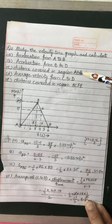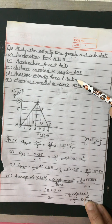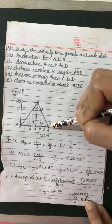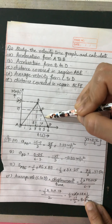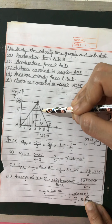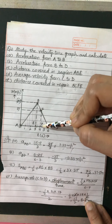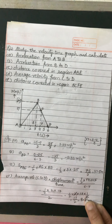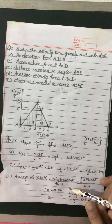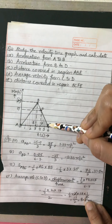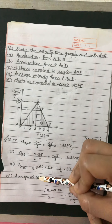Part D: calculate average velocity from C to D. Average velocity formula is displacement upon time. Since this is a velocity-time graph, if we calculate the area under the graph we get displacement. So we calculate the area of triangle CDF and divide by time to get average velocity.